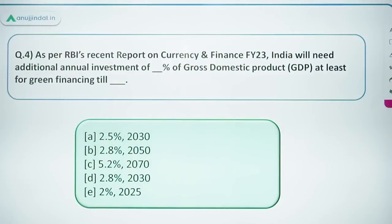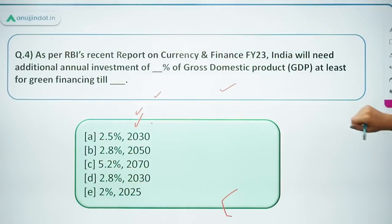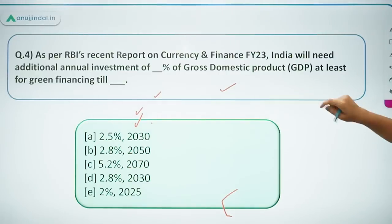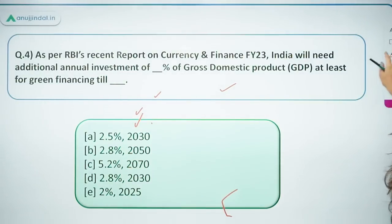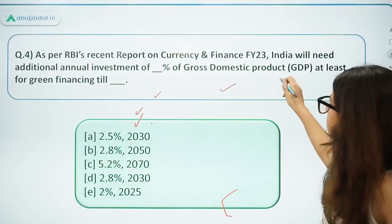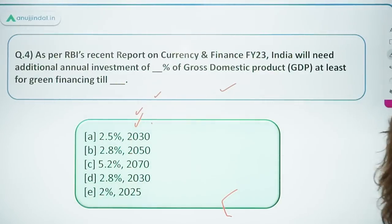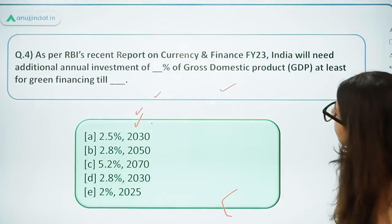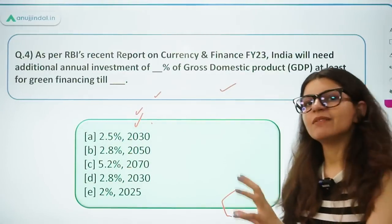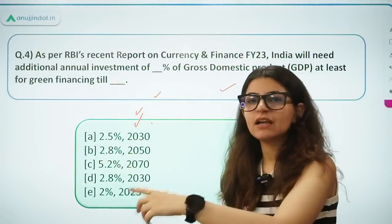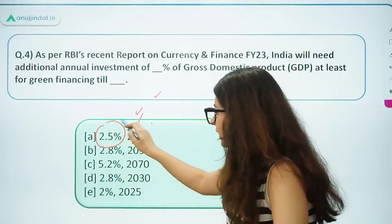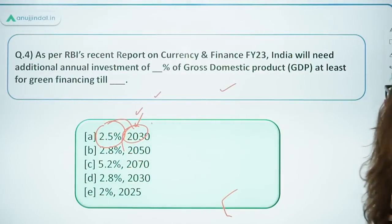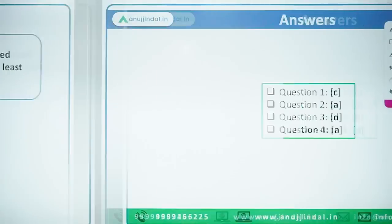Recently, RBI issued an advisory to banks to ensure a complete transition away from LIBOR from July 1st, 2023 — dates are important, especially for Phase 1 exams. As per RBI's recent Report on Currency and Finance, India will need additional annual investment of 2.5% of GDP for green financing till 2030.